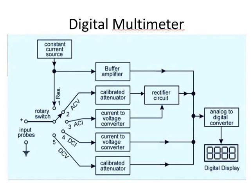The block diagram of the digital multimeter consists of a constant current source, buffer amplifier, calibrated attenuator, current-to-voltage converter and attenuator, rectifier circuit, analog-to-digital converter, and digital display. These are the main building blocks. An instrument capable of measuring AC and DC voltages, AC and DC currents, and resistances over several ranges is called the digital multimeter, also represented as DMM. The most important part is the rotary switch, which indicates five different positions.